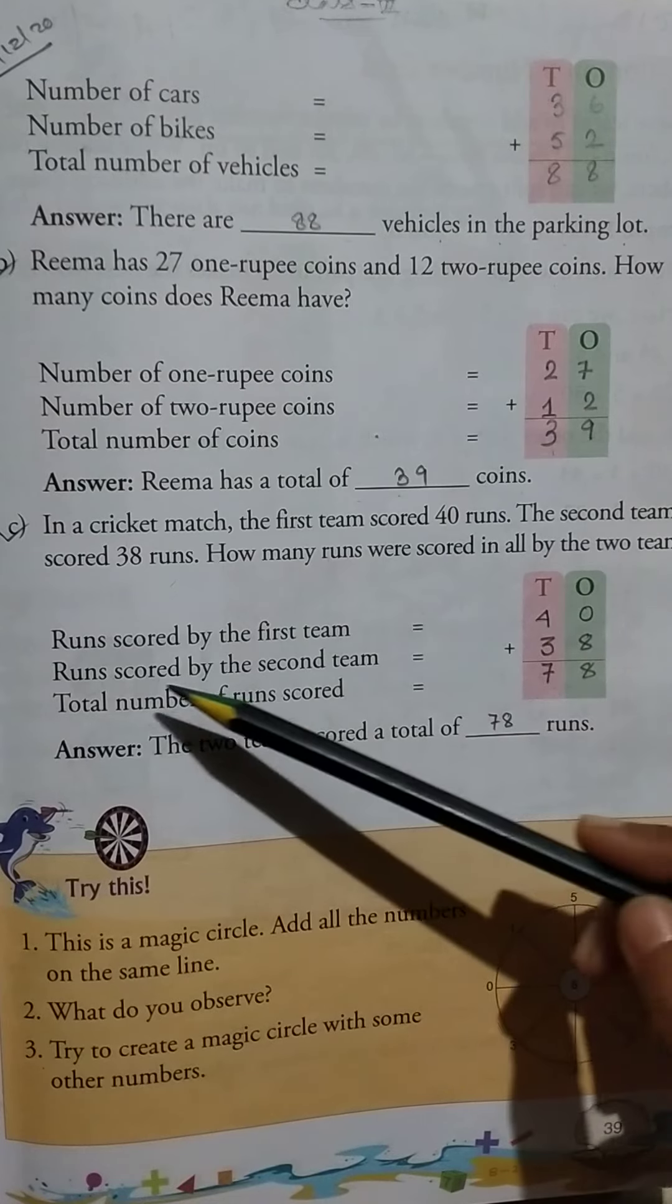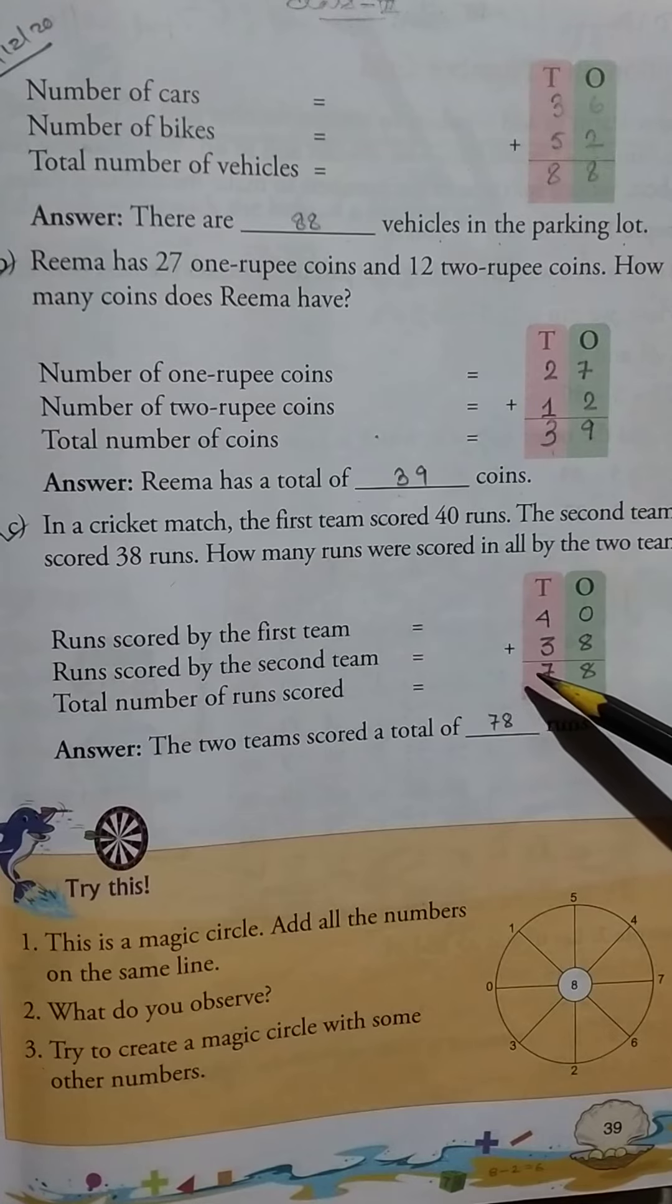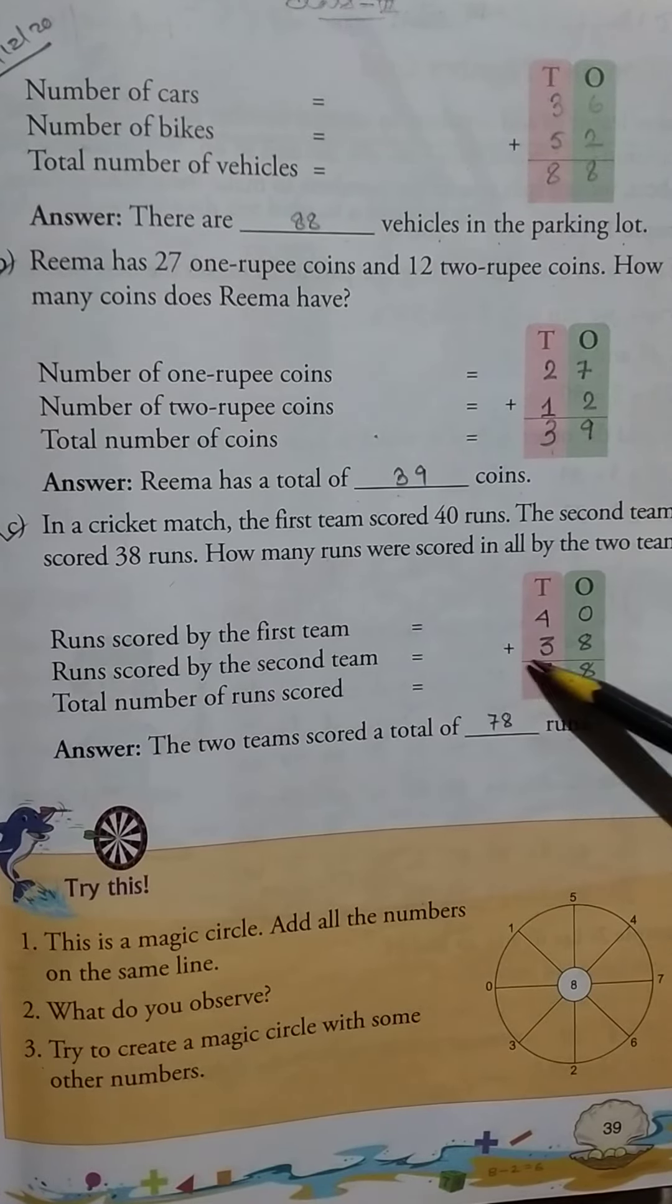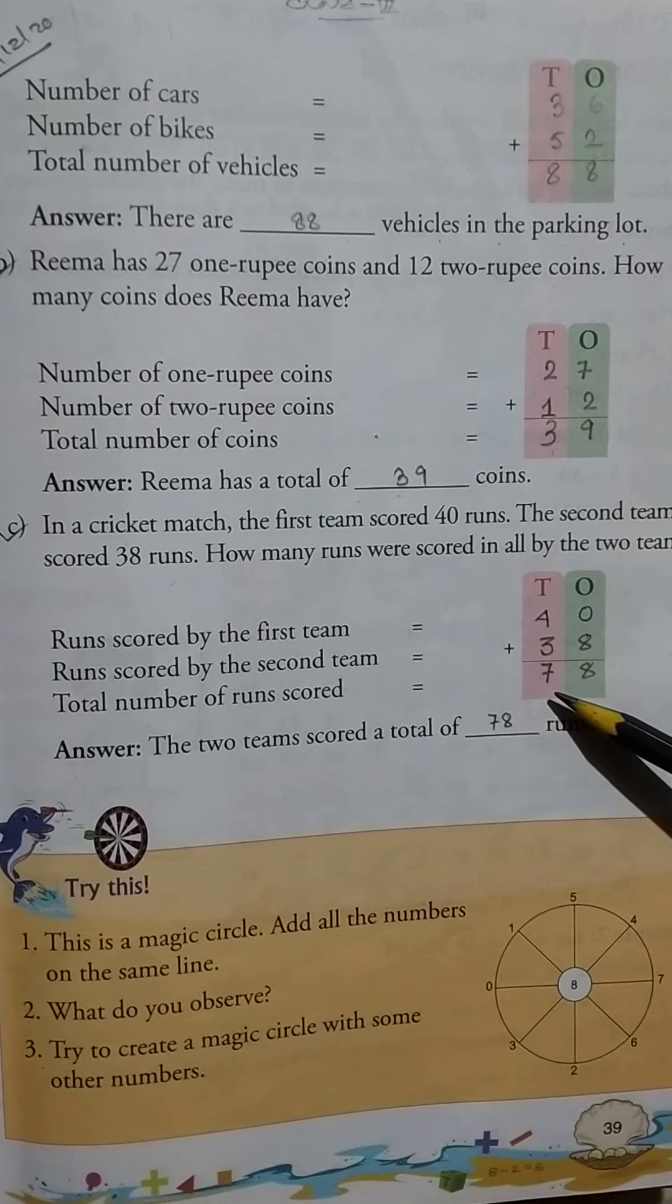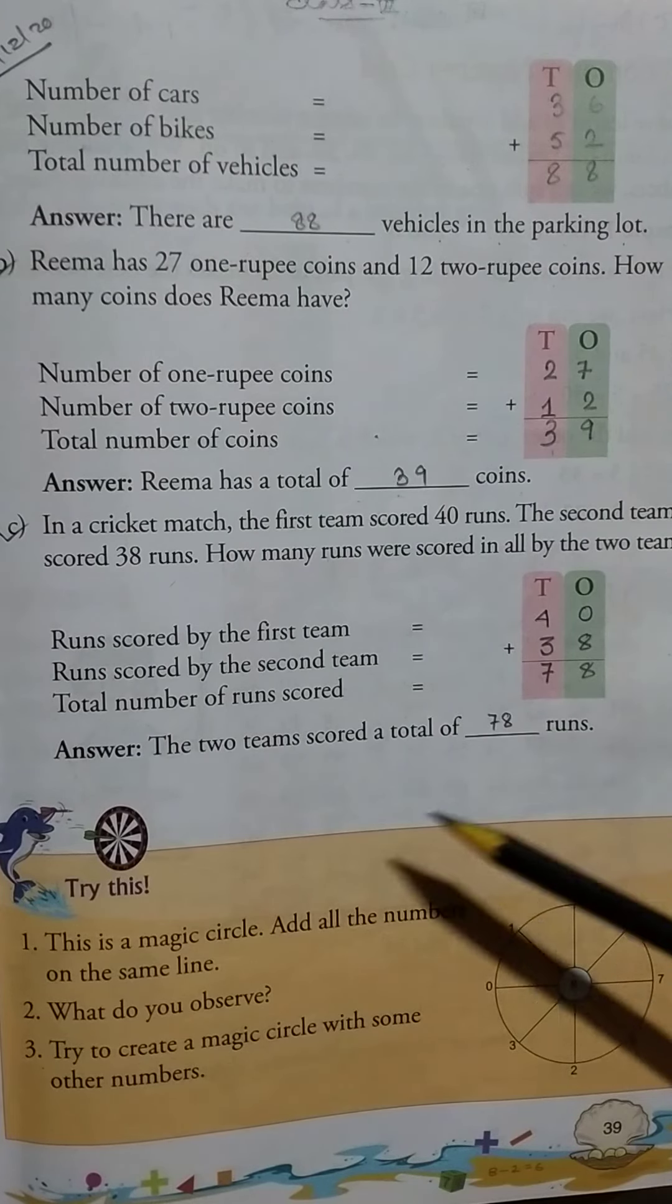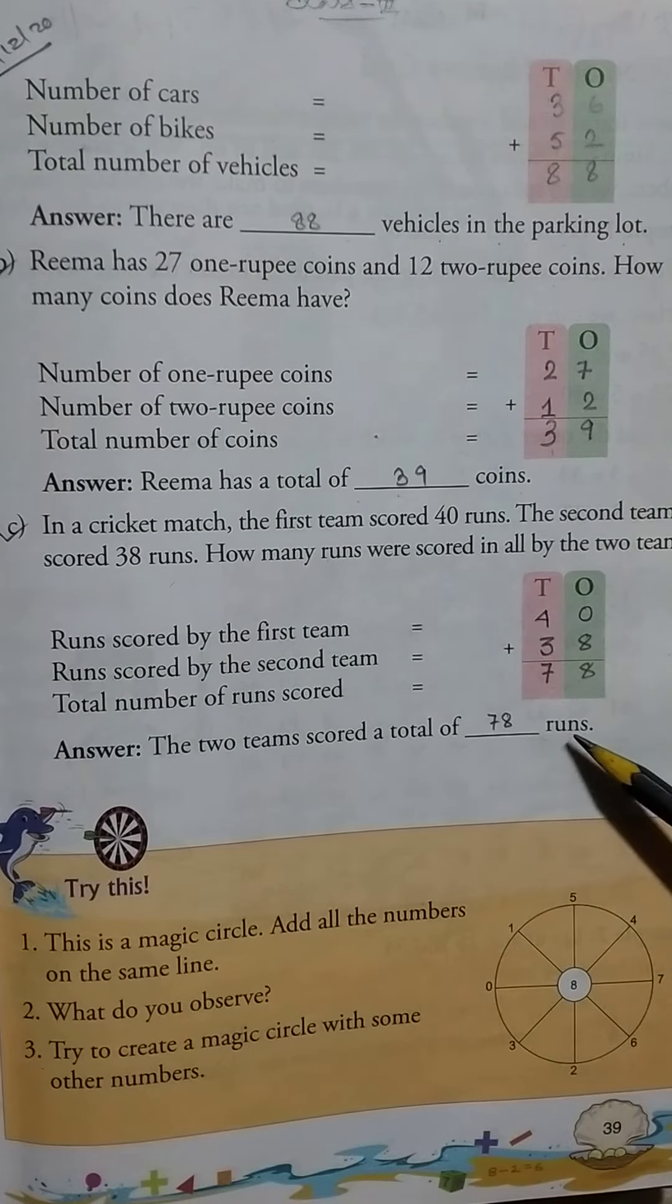Runs scored by the first team: 40. Runs scored by the second team: 38. Total number of runs scored equals 78. The two teams scored a total of 78 runs.